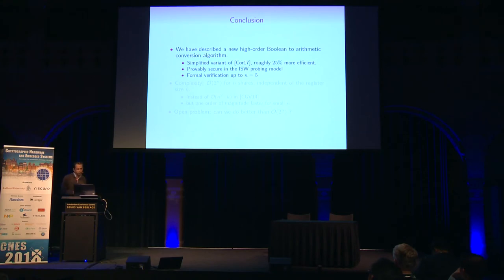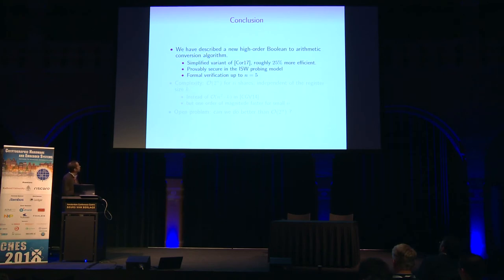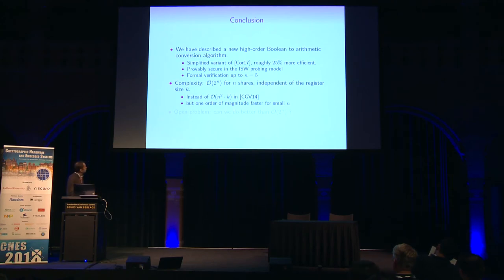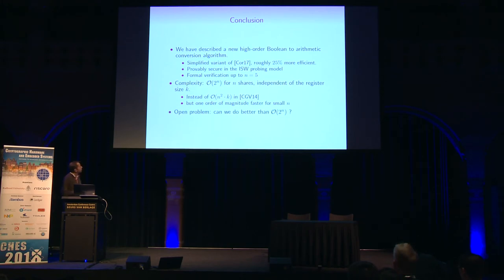To conclude, I have described a new high-order Boolean-to-arithmetic conversion algorithm that is simpler than last year's and a bit more efficient, with a proof of security and formal verification up to N equals 5. The main drawback is that complexity is exponential in the number of shares N but independent of K, the register size — so instead of N² times K from CHES 2014, for small N it is still much more efficient. The open problem is: can we do better than this exponential complexity?